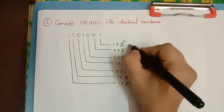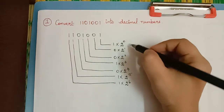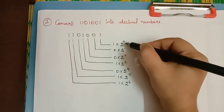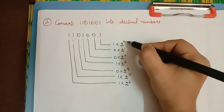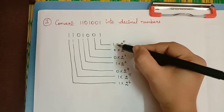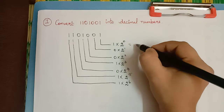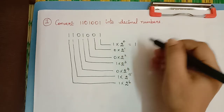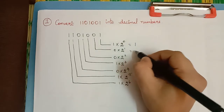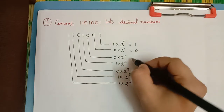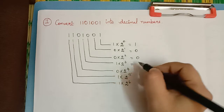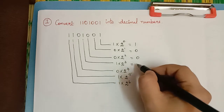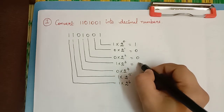Now, 2 to the power 0 is 1 — any number raised to the power of 0 is always 1. So 1 into 1 is 1. The next digit is 0, and the one after that is also 0. Then 2 to the power 3, which is 8.